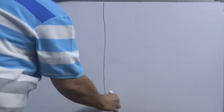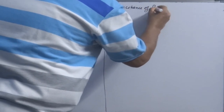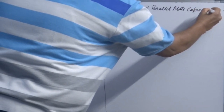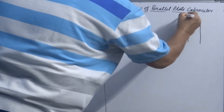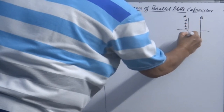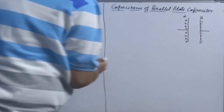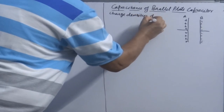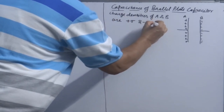Let's calculate the capacitance of a parallel plate capacitor having plates A and B. Plate A carries positive charge and plate B carries negative charge. The charge densities of A and B are plus sigma and minus sigma respectively.